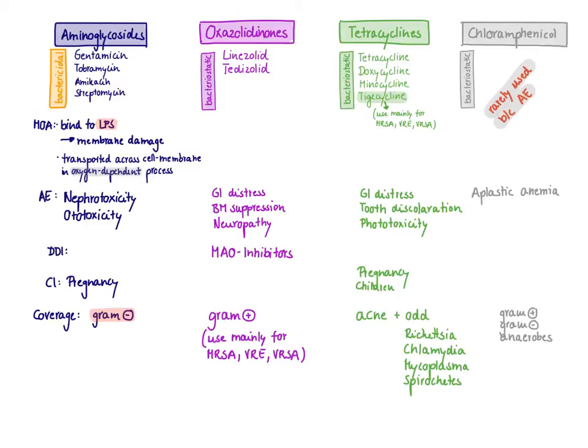Bone marrow suppression and neuropathy are predictable because they are related to mitochondrial toxicity. Ribosomes are very different between mammalian and bacterial cells, except in the mitochondria — mitochondrial ribosomes and bacterial ribosomes are in fact very similar. So some protein synthesis inhibitors may also inhibit mitochondrial protein synthesis. Since mitochondria are key organelles for energy production, tissues like optic nerve, retina, brain, skeletal muscle, and kidney are highly dependent on oxidative metabolism, explaining side effects like bone marrow suppression and neuropathy.